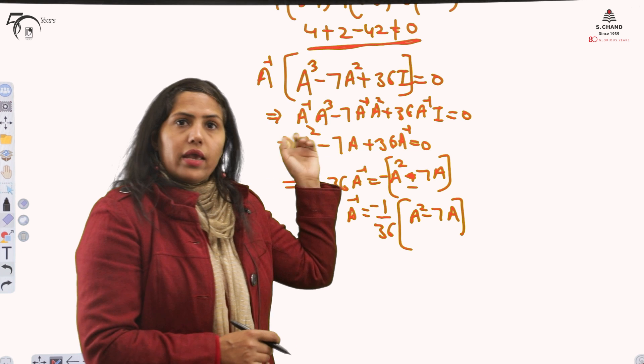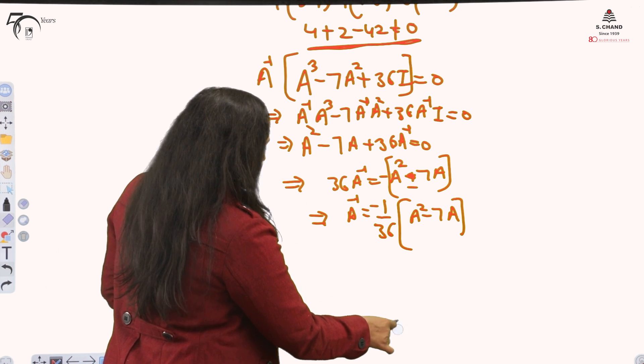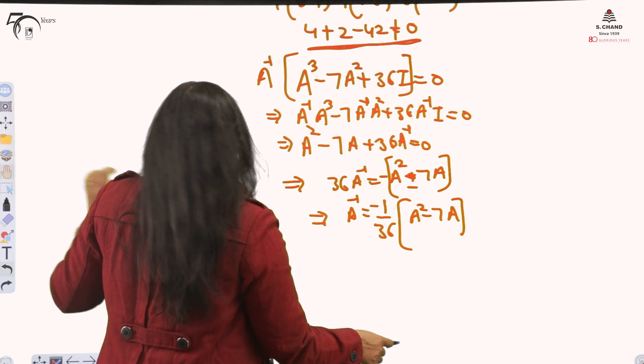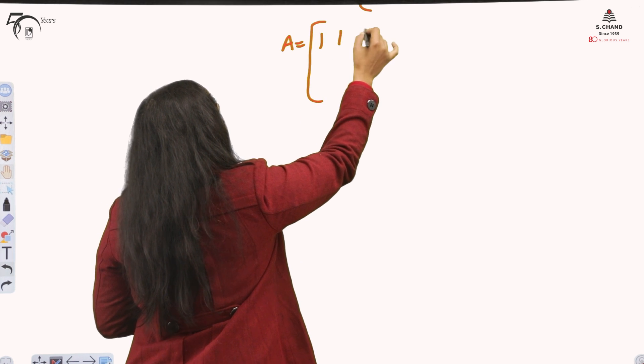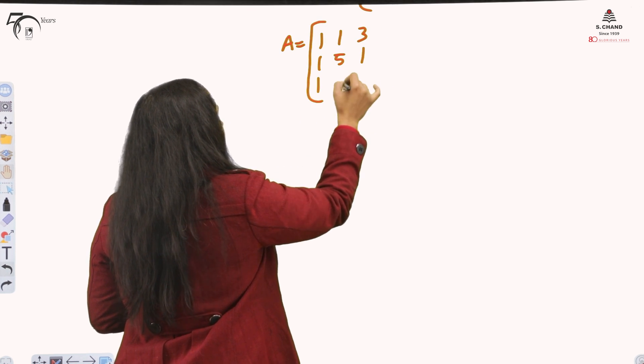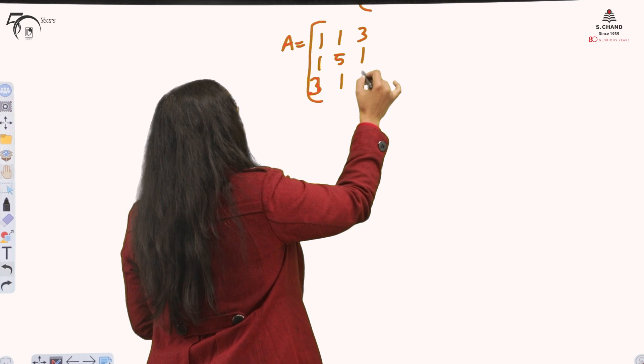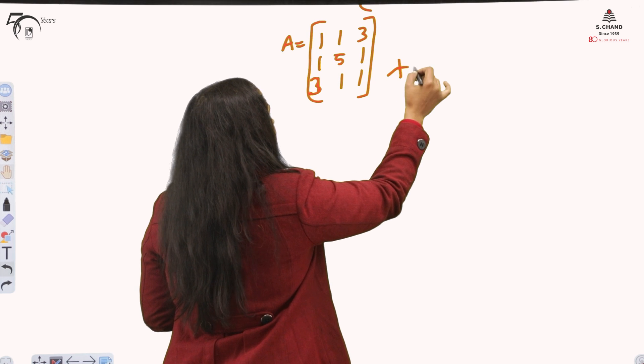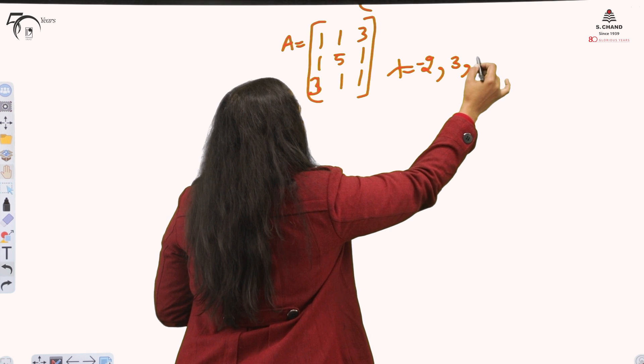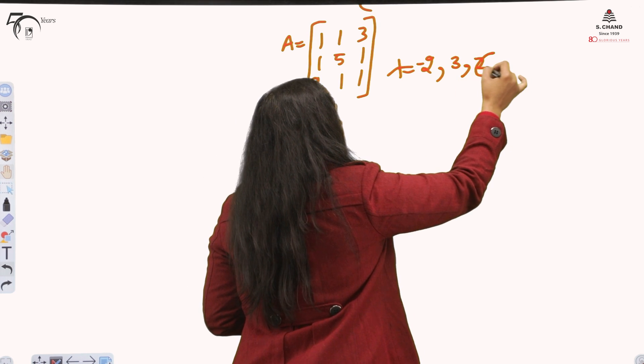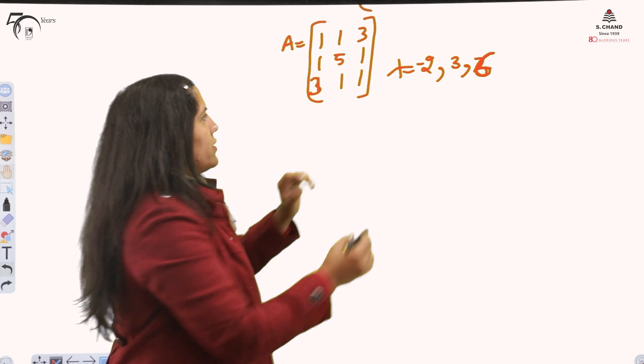We have got the eigenvalues for the matrix already. Now eigenvectors. The matrix A is 1, 1, 3, 1, 5, 1, 3, 1, 1. This was our actual matrix. Lambda values were minus 2, 3, and 6. These are the eigenvalues.